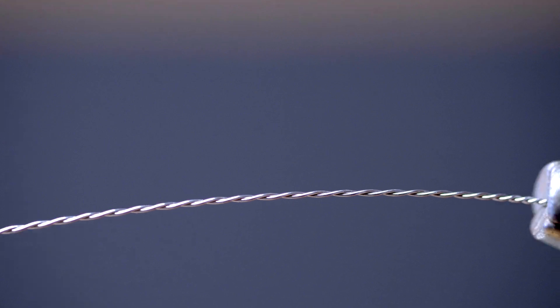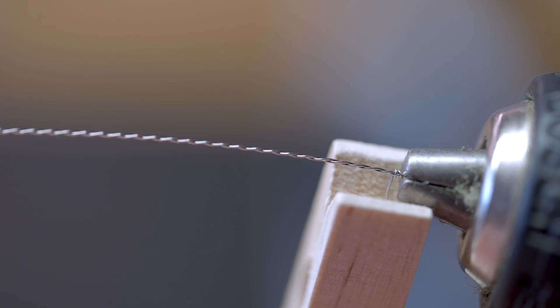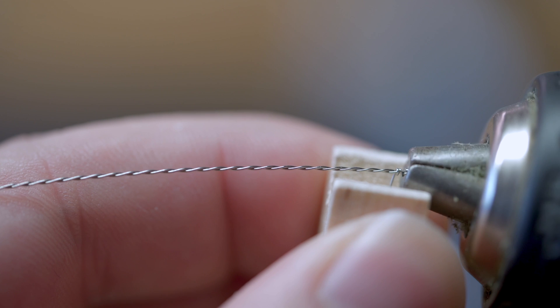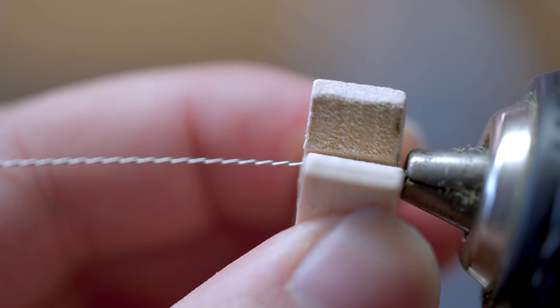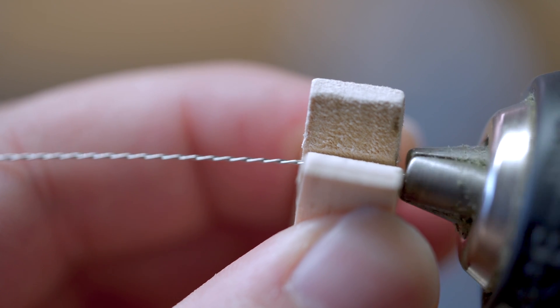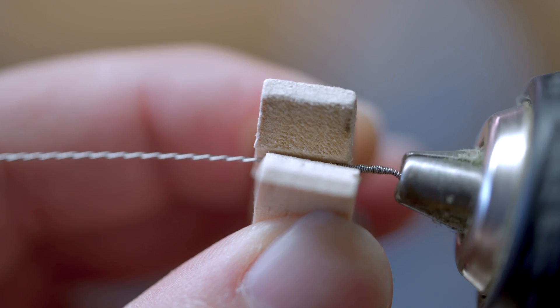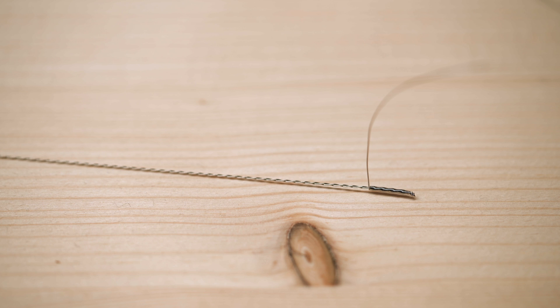I started with 0.25 millimeter or 30 gauge 96% platinum wire. My plan was to make a core with two twisted 0.25 millimeter platinum wires and winding a third wire around that core.